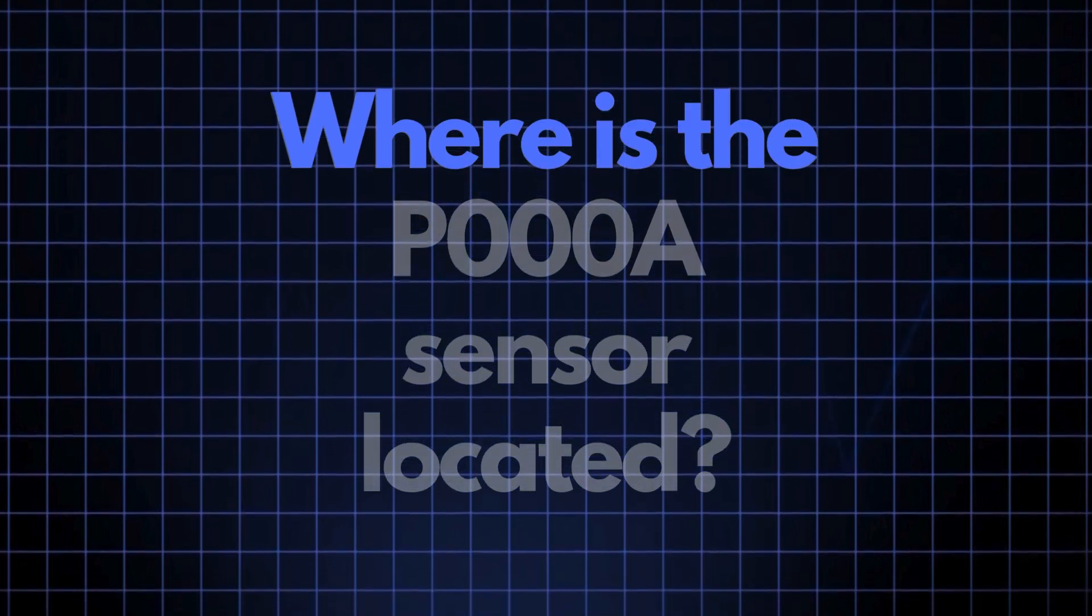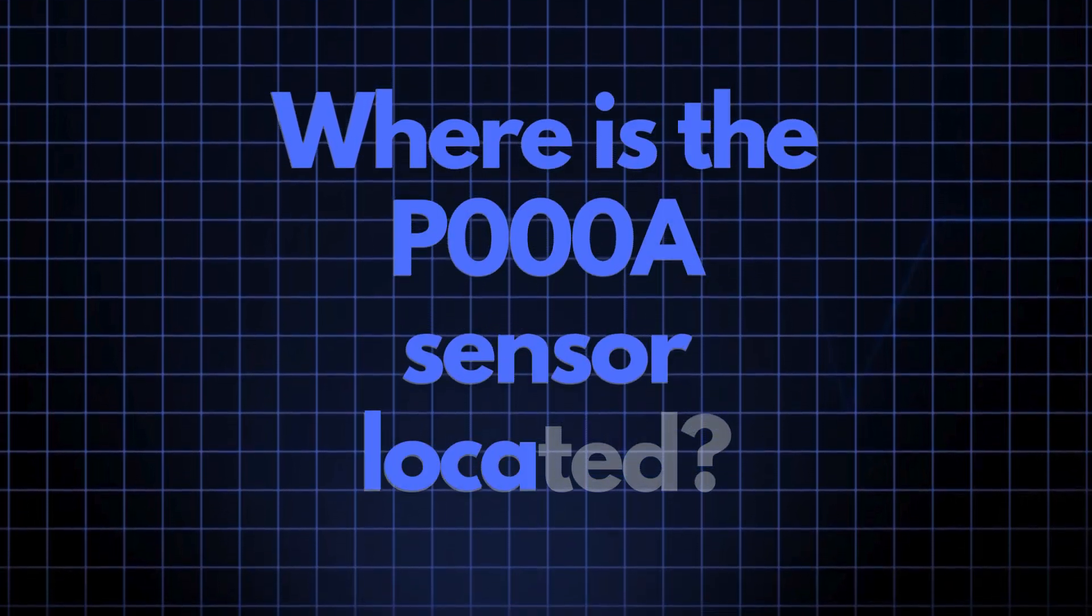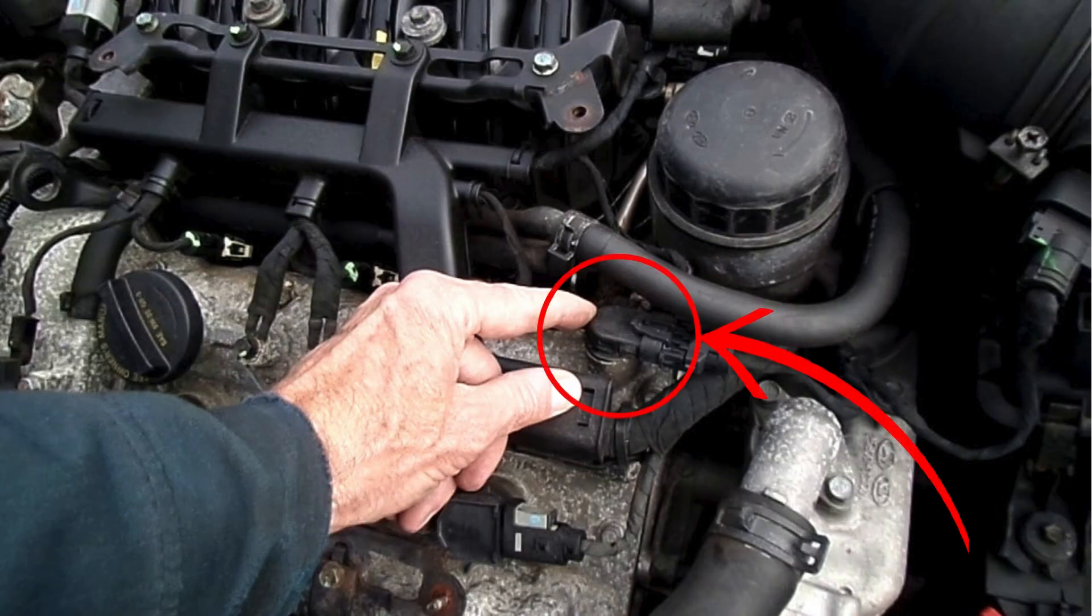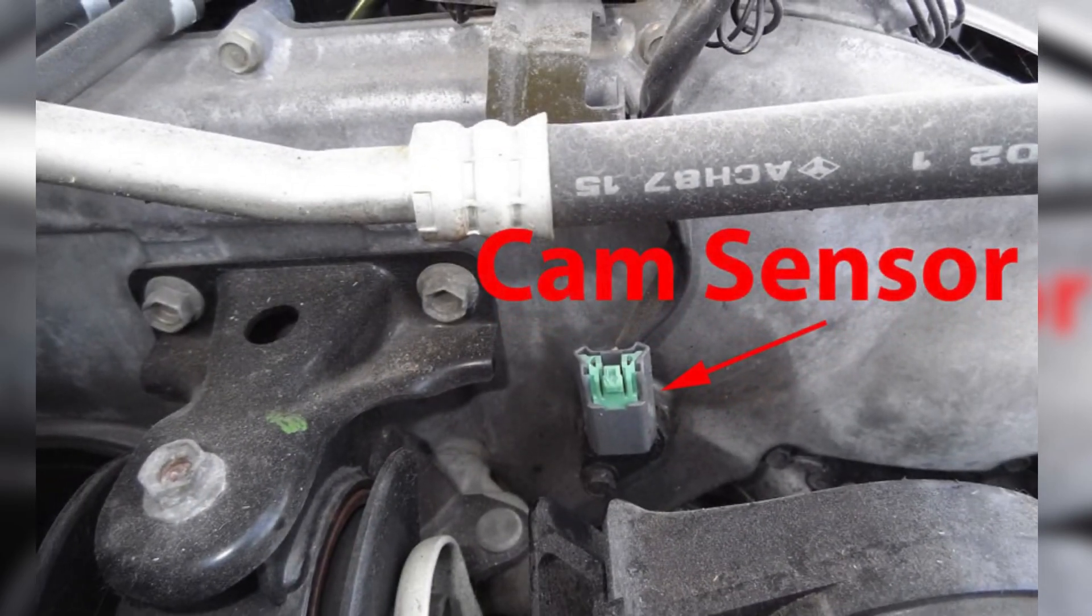Now, where exactly is the P000A sensor located? The camshaft position sensor responsible for triggering the P000A code is usually positioned close to the camshaft. Its exact location can vary depending on your vehicle's make and model.